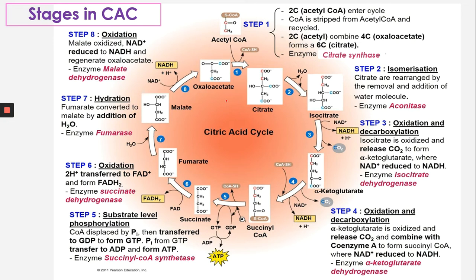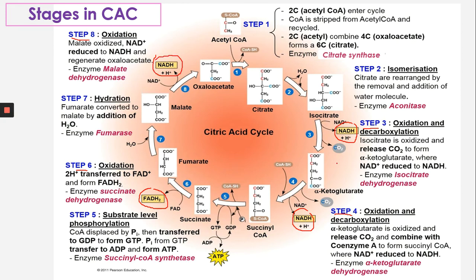Reviewing the cycle: oxidation takes place four times per cycle — in steps 3, 4, 6, and 8. Four electron carriers are produced per cycle: NADH in steps 3 and 4, FADH2 in step 6, and another NADH in step 8. That gives three molecules of NADH and one molecule of FADH2 per cycle.